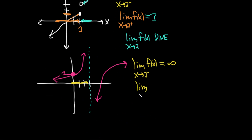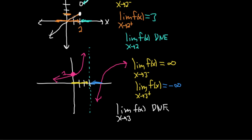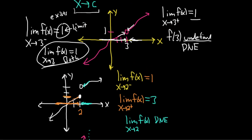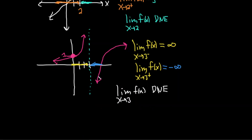Now let's take the limit as x approaches 3 from the right. Getting infinitely close to 3 from the right, the y values fall down forever. So f of x approaches negative infinity. The limit from the left is infinity, the limit from the right is negative infinity. Since they're different, the limit as x approaches 3 does not exist. If they were both infinity, we would write infinity, but it still means the limit does not exist — a limit only exists if it's equal to a number. Whenever you see a number, the limit exists.